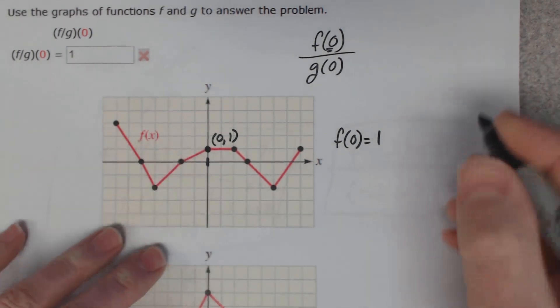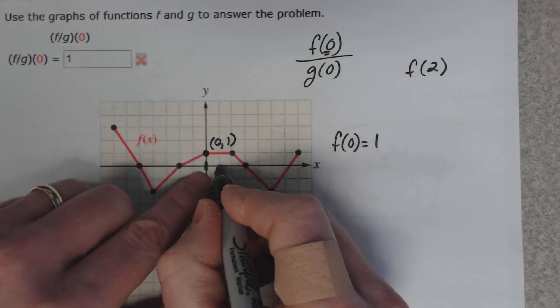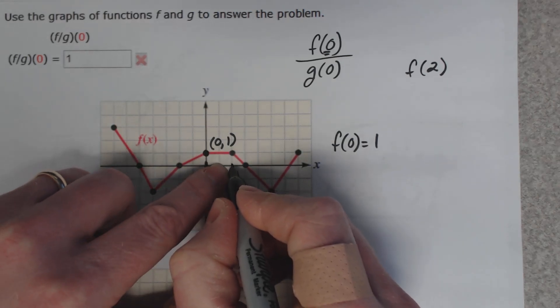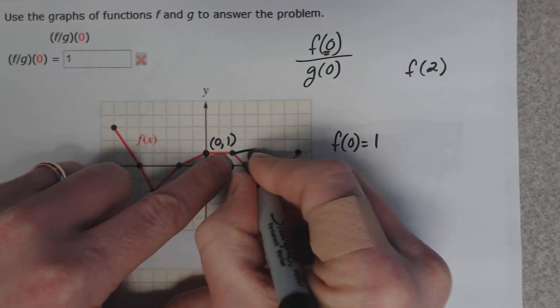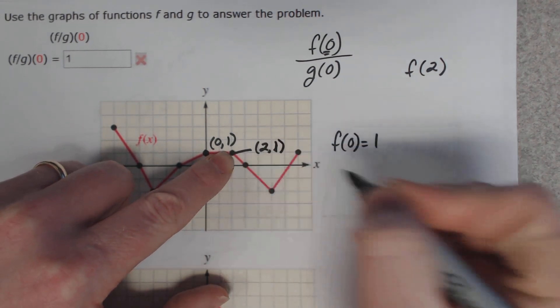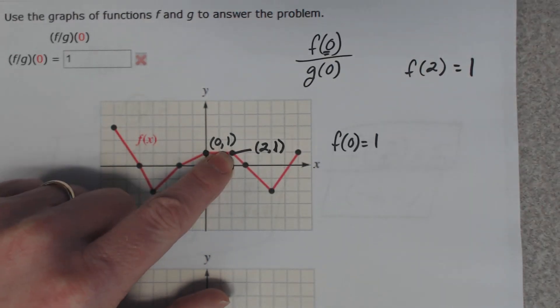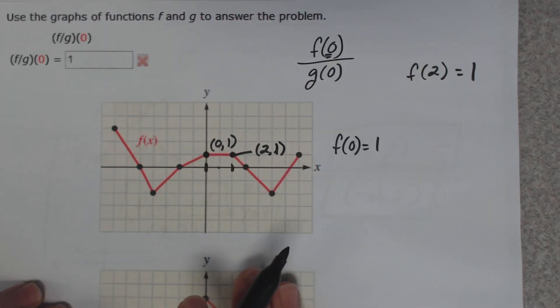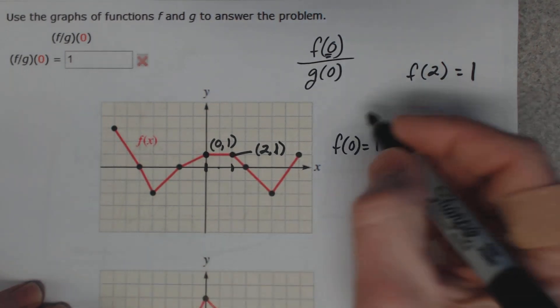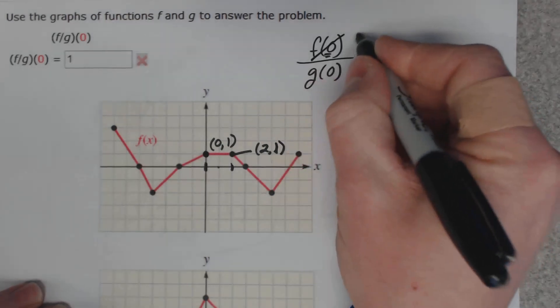What if it was different? What if it said find f(2)? Well, we go over here to 2 and see what the y-coordinate is. 1. See that point right there? It is (2, 1). So f(2) = 1. So it's just a fancy way of asking you to plot points. So f(0) is 1, so that's what I'm going to put up here at the top. A 1.